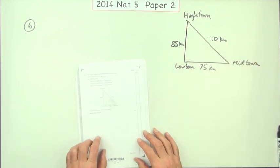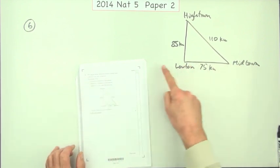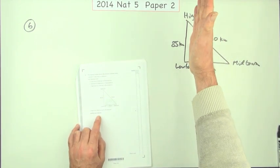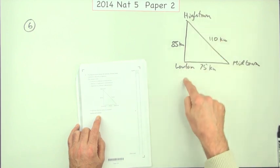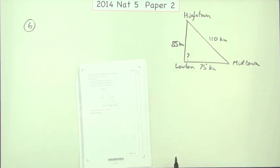It gives you these distances and it says Lowtown is due west of Midtown. So you can think of that like a horizontal line. Is Hightown directly north of Lowtown? Imagine they've got teams of people working out these questions for you. So the question really is, is that a right angle?